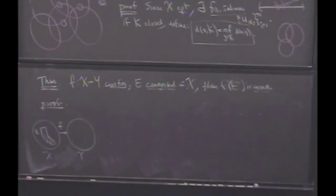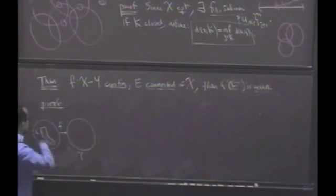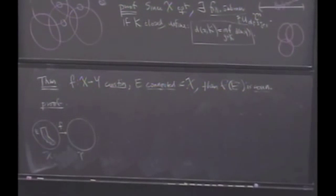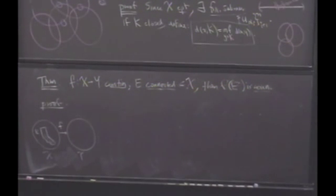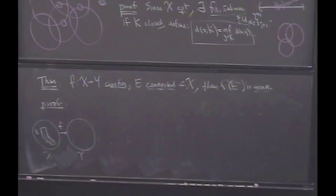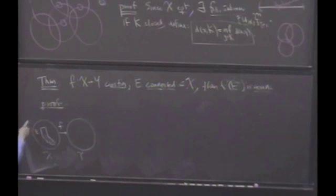The claim is the image is connected. What's the perfect way to start off this proof? Connectedness — what does it mean to be connected? A set cannot be separated; it's not the union of two non-empty separated sets. It's always easier to work with sets that aren't connected, so if I want to show the image is connected, maybe I should do this by contradiction.